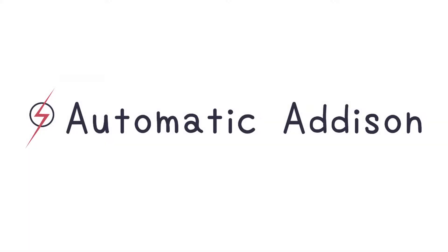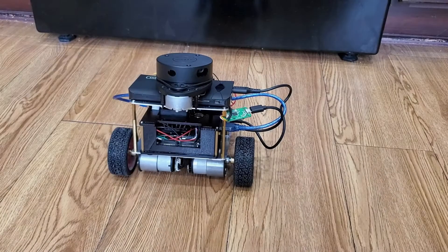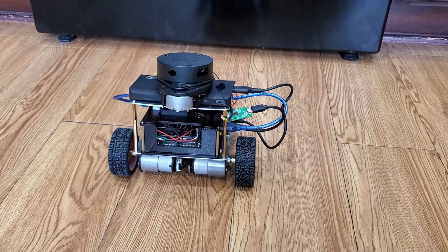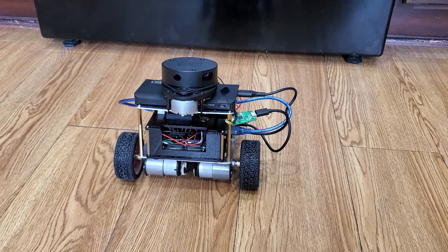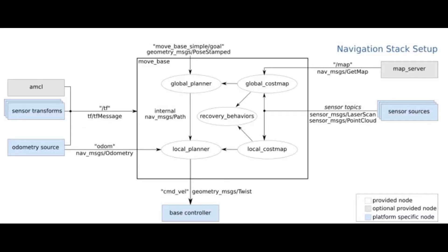In this project, I set up and configured the ROS navigation stack for a mobile robot. The ROS navigation stack is a collection of ROS software packages that you can use to help your robot move from a starting location to a goal location safely. The complete steps for this tutorial are located in the link in the description of this video.